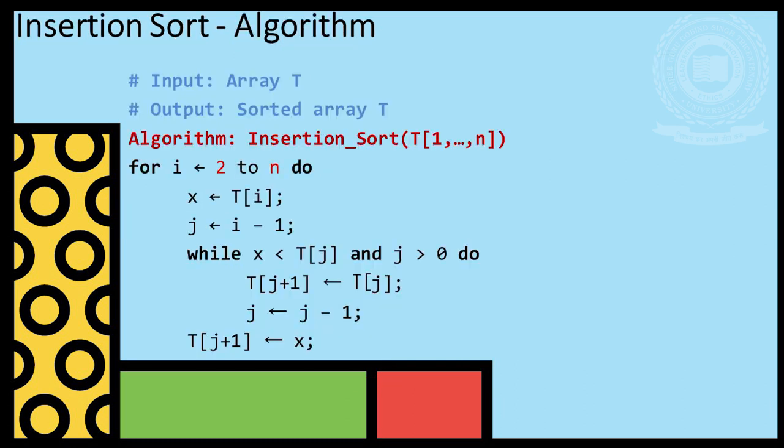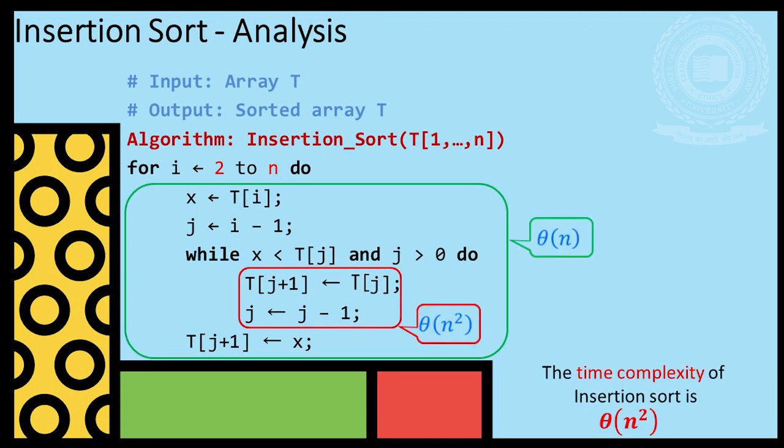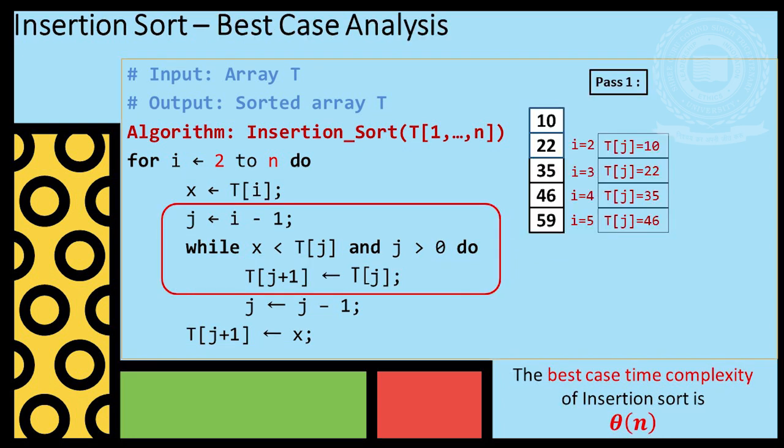On the screen, we can see the pseudocode of insertion sort, where every element is picked from left to right and inserted at its current location in sorted array, present in left portion of array. Time complexity in inner loop is n square and time complexity of outer loop is n. Worst case and average case complexity is theta n square, whereas best case means low number of comparisons. So, loop will run only n times, so it is in order of n.